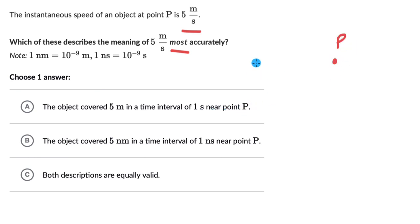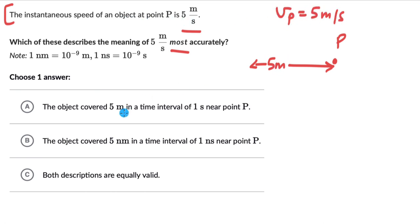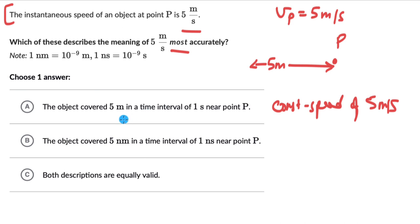So if this is point P, then in 1 second the object covered 5 meters. We need to think about whether this statement is the most accurate description of the instantaneous speed at point P being 5 meters per second. This could be the most accurate description if the object was moving with a constant speed of 5 meters per second — then we can say the object will cover 5 meters in a time interval of 1 second near point P. But we don't really know that.